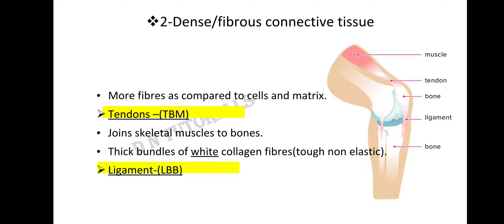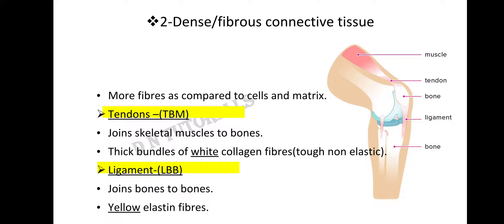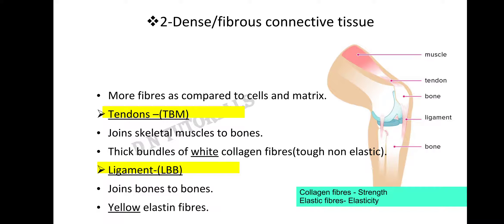The second type is the ligament. Ligament connects your bones to bones and consists of yellow elastin fibers. Bone is a non-elastic structure, so when two non-elastic structures move, there has to be something elastic in between. These ligaments are made up of yellow elastin fibers which provide elasticity. Collagen fibers are responsible for strength, while elastin fibers provide elasticity.